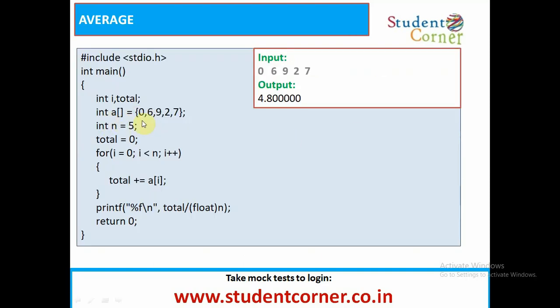We need to take an array. The array contains some elements. After that, for i equals 0 to i less than n, i plus plus, total plus equals - plus equals is the assignment operator. It means total equals total plus a[i]. Initially, total equals 0 and we are adding all the values. After adding that, total by n.